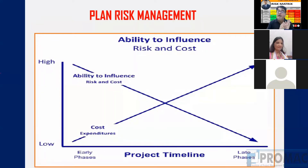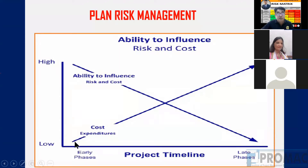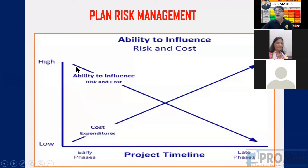This graph shows the ability to influence risk and cost. In the early phases, if we manage and plan for risk, our cost is very low. If we are late in the project, our cost to handle the risk will increase. So it is always advisable that in the early phases of the project we must identify the risk.